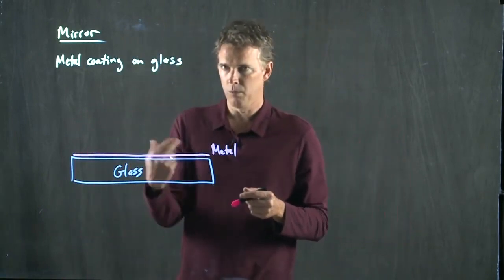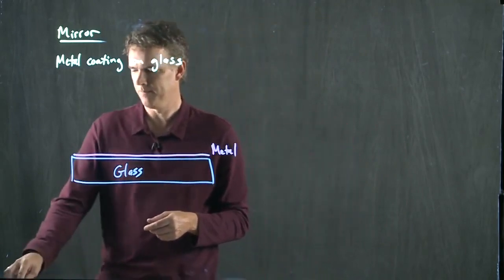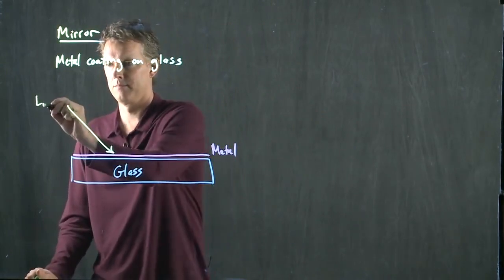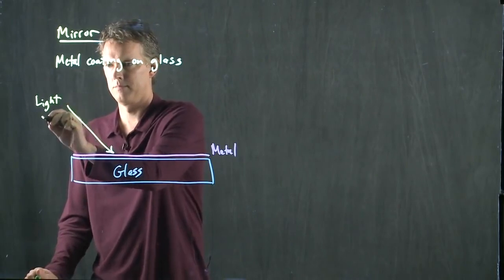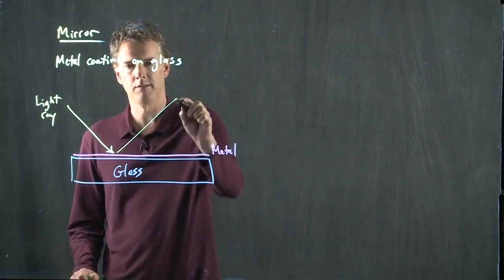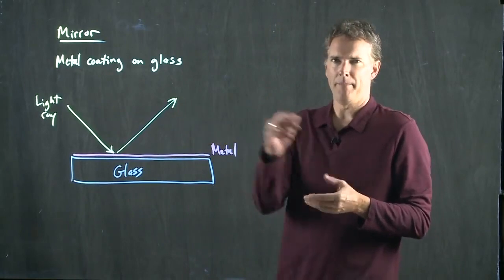The metal is what does the reflection. So when a light ray comes in, here comes our light ray. It hits the mirror and it bounces off. Why does that happen?